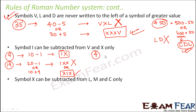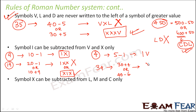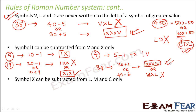Similarly, 4 is 5 minus 1, written as IV. Now how would you write 34? 34 can be written as 30 plus 4 or 40 minus 6. If you write it as 30 plus 4, that is XXXIV. If you write it as 40 minus 6, 40 is XL and minus 6 means I would be subtracted from XL, which doesn't follow the rule — I can only be subtracted from X or V alone. So XXXIV is the correct way of writing 34.